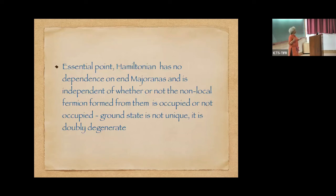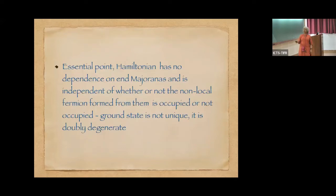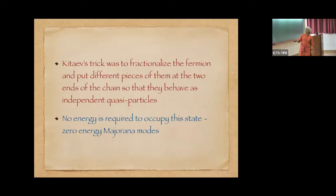This can be shown in a very simple quadratic Hamiltonian. I'm not going through it in detail here because of time. The essential point is that what you find is that the Hamiltonian has no dependence on these two end Majoranas. So this becomes a degenerate state. It's doubly degenerate because you can think of a fermion out of these two Majoranas, but the Hamiltonian does not depend on whether it's occupied or not occupied. So this is a doubly degenerate ground state. So Kitaev's trick was essentially to fractionalize the fermion and put different pieces of them at the two ends of the chain so that they behave as independent quasiparticles and no energy is required to occupy this state, which is why one can have zero energy Majorana modes.